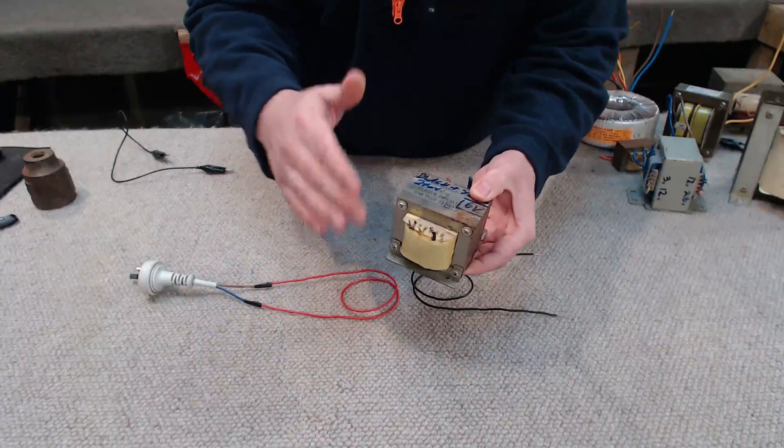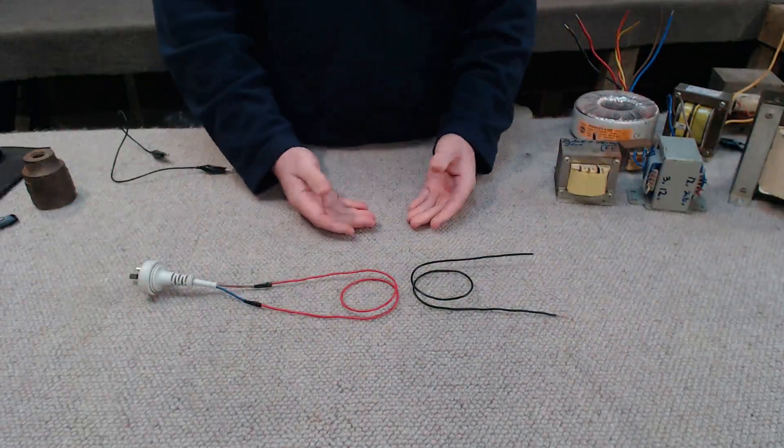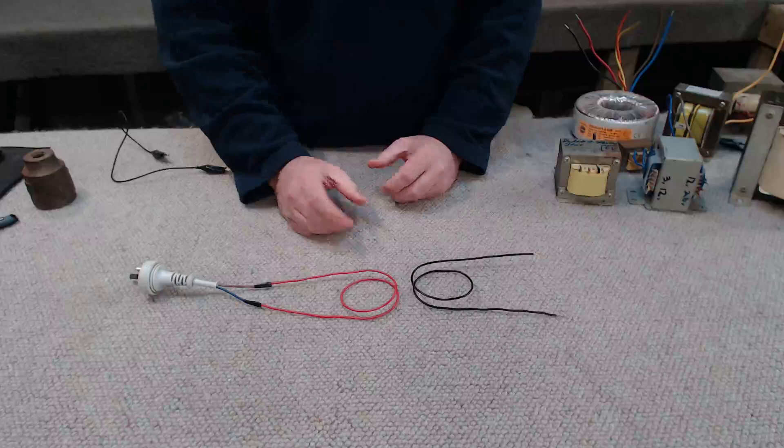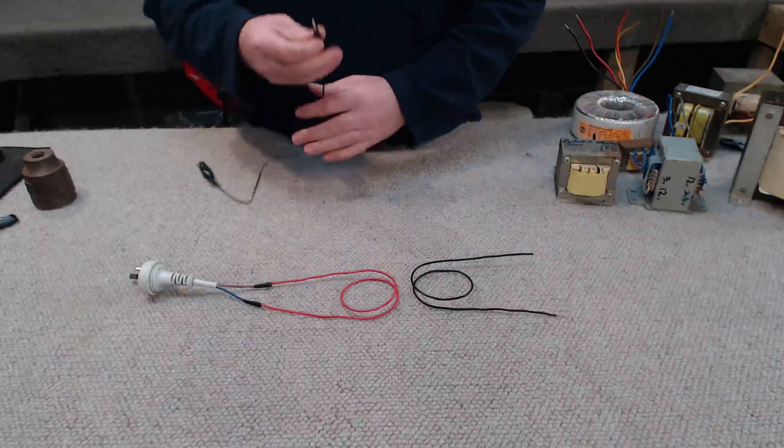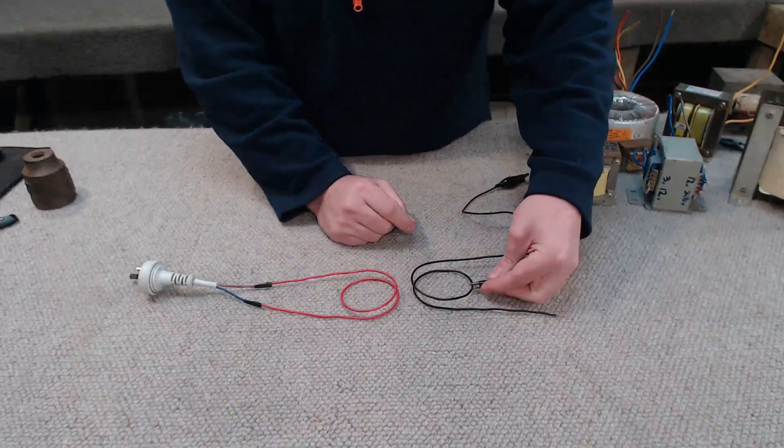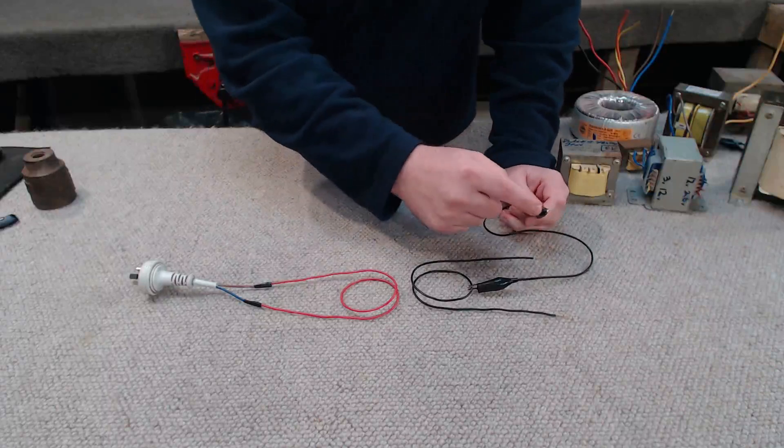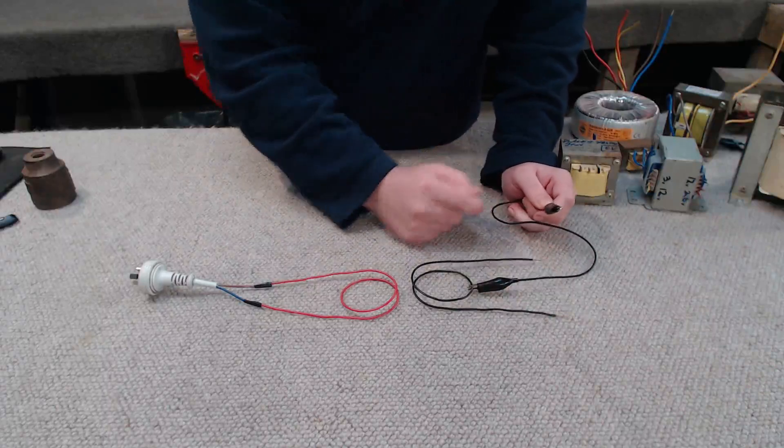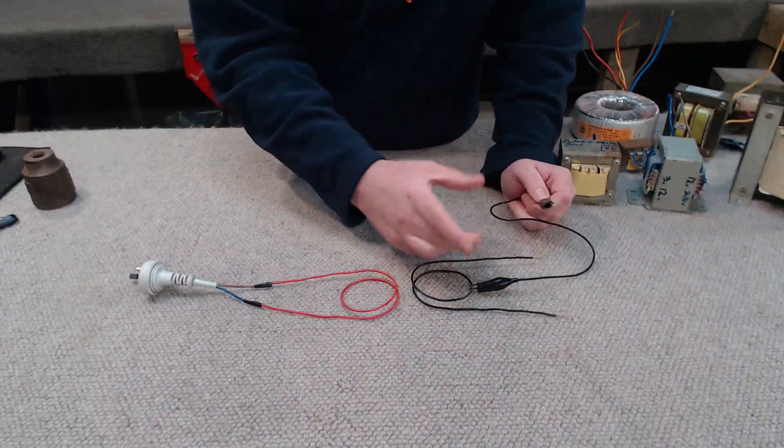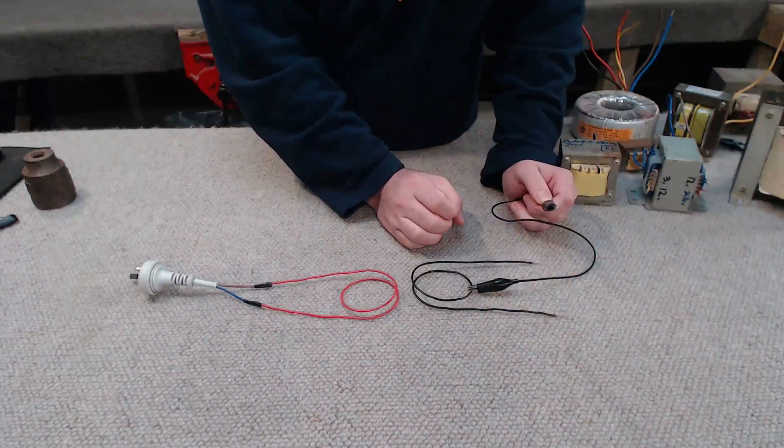Well one of the windings, and this can be either the primary or secondary, can have a tap put in somewhere along the winding. So a tap is where the manufacturer at some point in the winding came along and electrically connected a wire. So now between this point and either of these points, I'm going to get a different voltage when compared to these two points on the secondary winding.